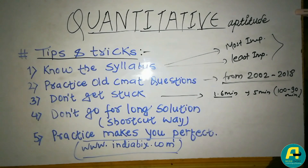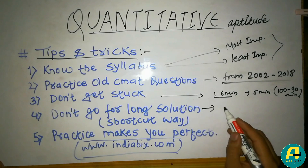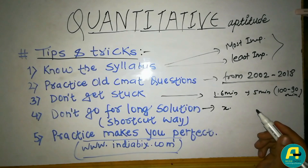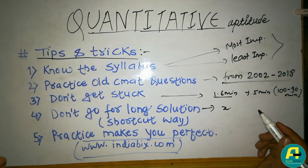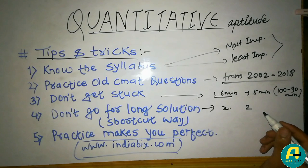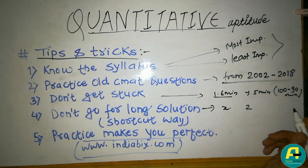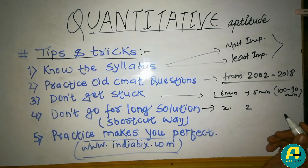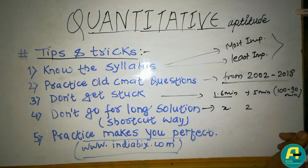You will find the remaining 100 questions. You may have 100 questions in 90 minutes. Don't go for a long solution. You don't need to make a complex solution. Solve with the short-cut method. Don't go for long solutions — find the short-cut way.